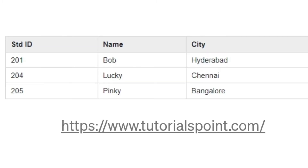In this example of a relational database management system table, we have a student table. In it, we have three columns: STDID, which is student ID and also our primary key, and then name and city. Remember that the primary key is a way to uniquely identify each row in the table.